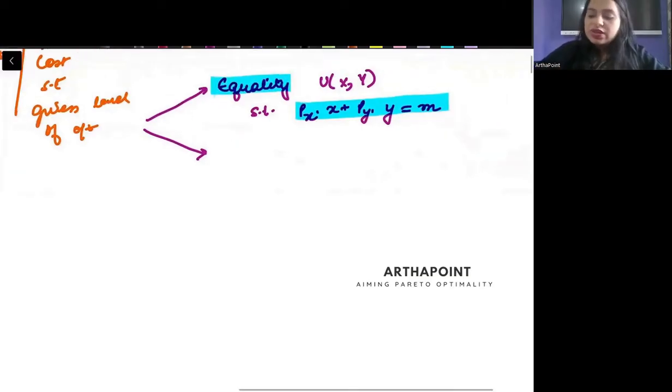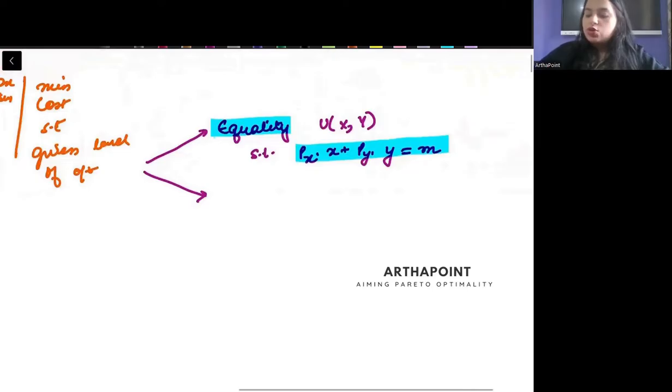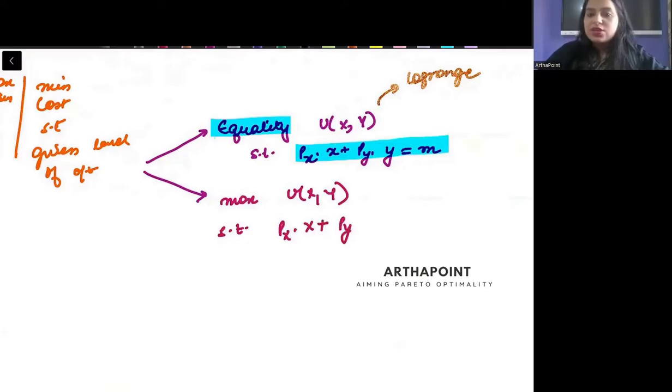In this equality constraint, the best thing to do will be to use the Lagrange. But sometimes you also have unequal constraints or inequality constraints. Like for example, if I take the same function, I tell you maximize your utility function subject to px into x plus py into y less than equal to income. And at the same time,